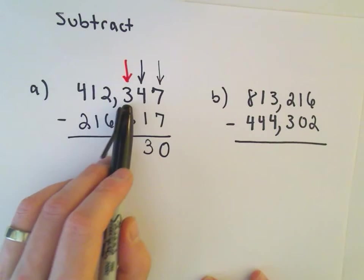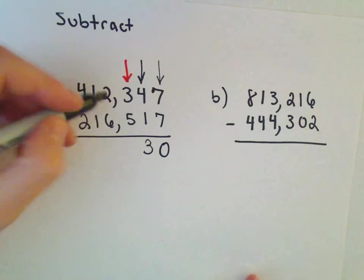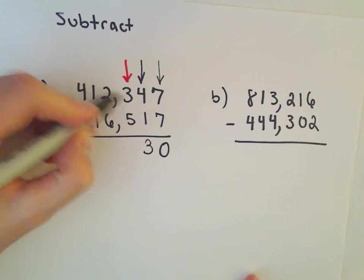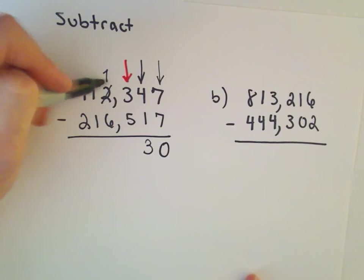So if the number on top is smaller than the number on the bottom, what we do is borrow a digit from the next column. So instead of a 2, I'm going to bump this down by 1, which would make it into a 1. And instead of a 3,